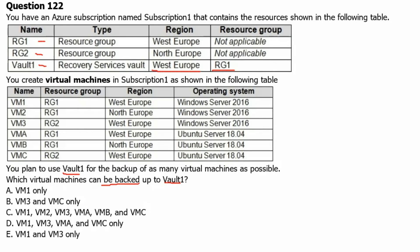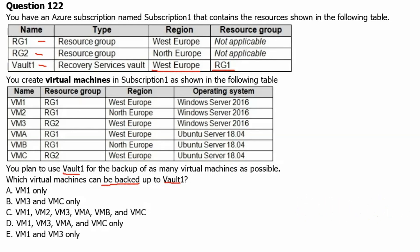There are two conditions which must be met to backup a virtual machine: the recovery service vault should reside in the same region, and the virtual machine backup should not already be happening on another recovery service vault. Whether the virtual machine resides in resource group 1 or resource group 2 does not make any difference for the recovery service to take the backup. Our recovery service vault is residing in West Europe, so we can take the backup of virtual machines which are residing in West Europe.